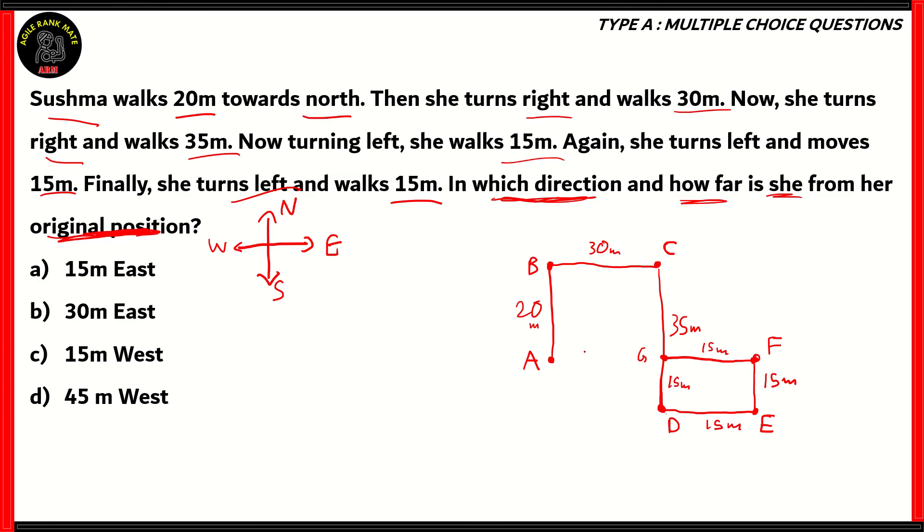Now, we need to find out the distance between A, G and the direction of G from A. Now, we have the rectangle A, B, C, G. Now, a rectangle is basically a parallelogram. So, parallel sides of a rectangle or a parallelogram are equal. So, therefore, the distances A, B, and C, G are both 20 meters. And, similarly, the distances B, C, and A, G are equal to 30 meters. So, therefore, we now know the distance between A and G. That's 30 meters.